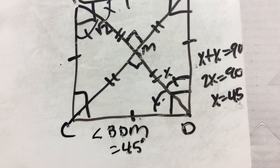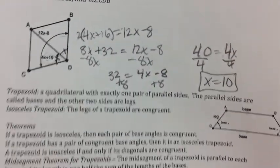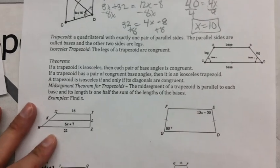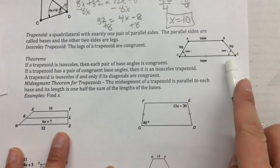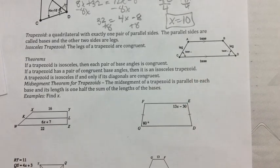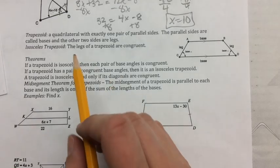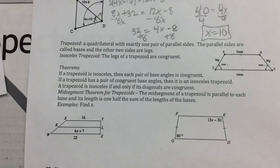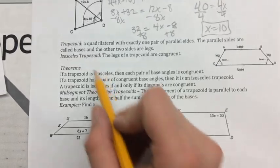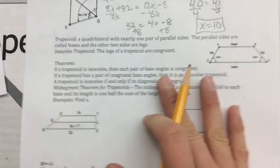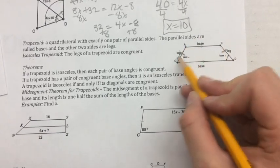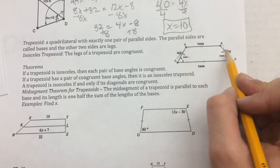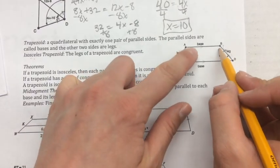We also have something called a trapezoid. It is not a parallelogram — a trapezoid only has one pair of parallel sides. The parallel sides are called the bases and the non-parallel sides are called the legs. We also have an isosceles trapezoid, just like an isosceles triangle where two sides are congruent. In an isosceles trapezoid, the legs are congruent, and the two pairs of base angles are each congruent.